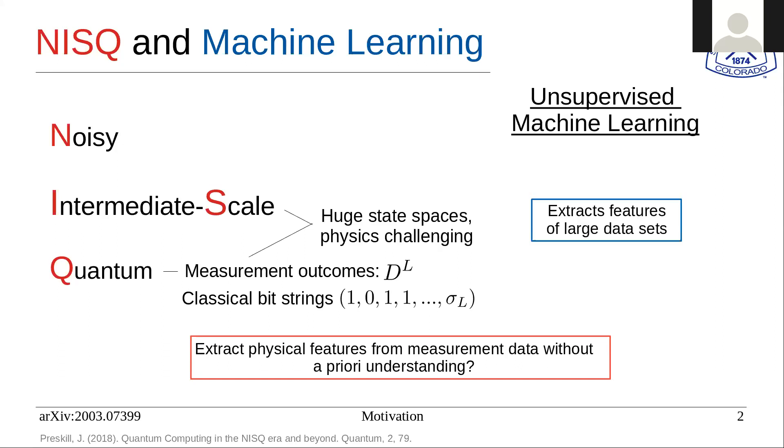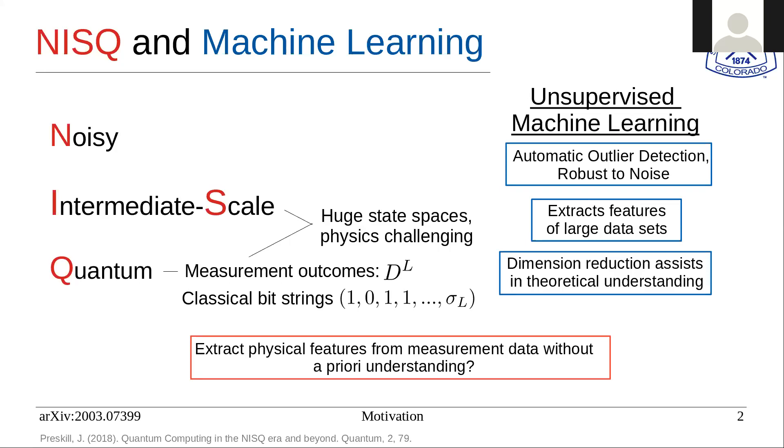This is where unsupervised machine learning comes in. It's very useful because it can automatically extract features from large data sets. Not only that, dimensionality reduction can help assist in theoretical understanding because you can reduce the complexity of these very large state spaces and boil them down into lower dimensional representations that you can further study and hopefully understand better than the large and complex data sets. They are often robust to noise and can detect outliers. In particular, we'll focus on feature extraction and dimensionality reduction.